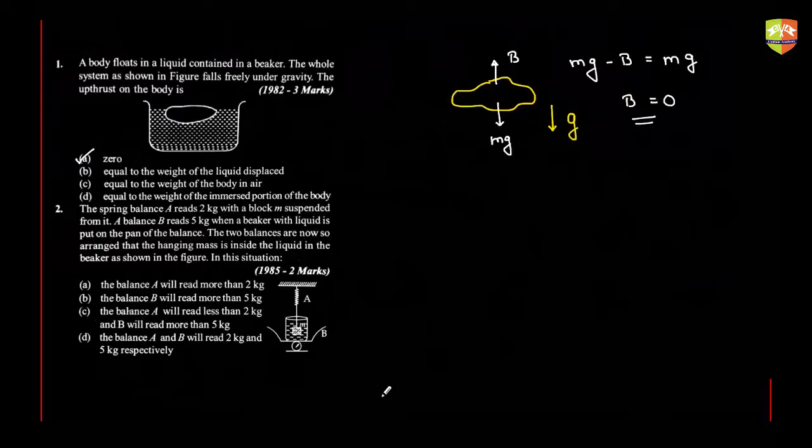Buoyant force will not be applicable when it is falling under the gravity. So vertically, if things are at rest, then only buoyant force is M into G. Otherwise, you have to take G effective just like the weight of the object changes when it is inside the lift. Just draw the free body diagram, you'll be able to see what could be the effective G. So buoyant force is rho V G effective. When it is freely falling, G effective is zero.